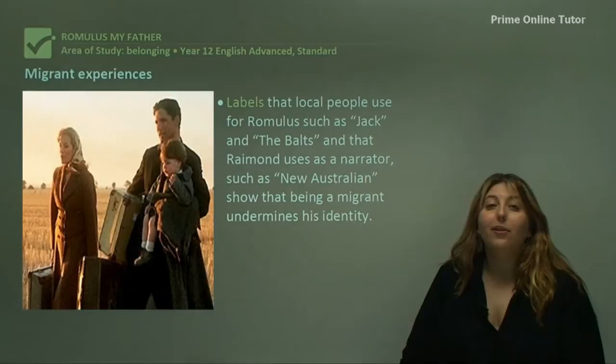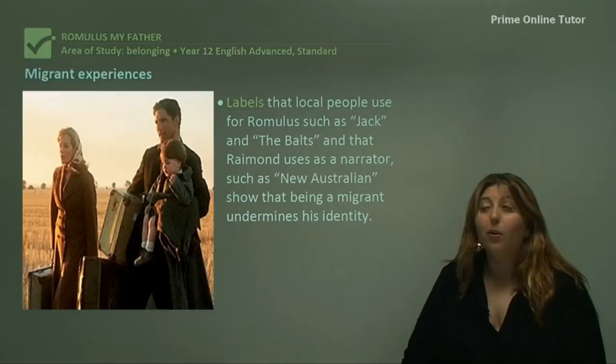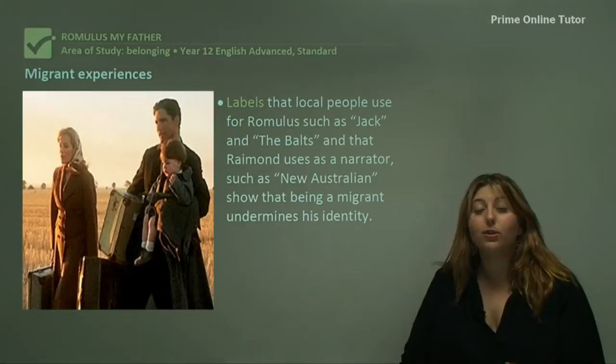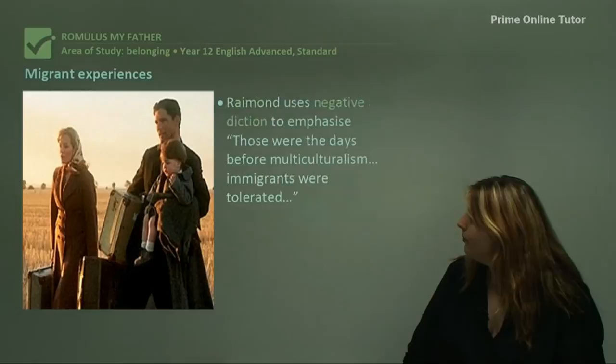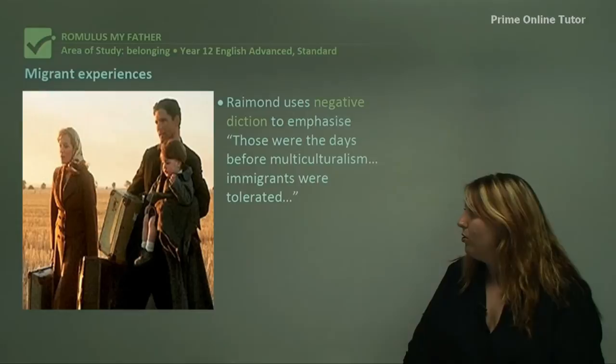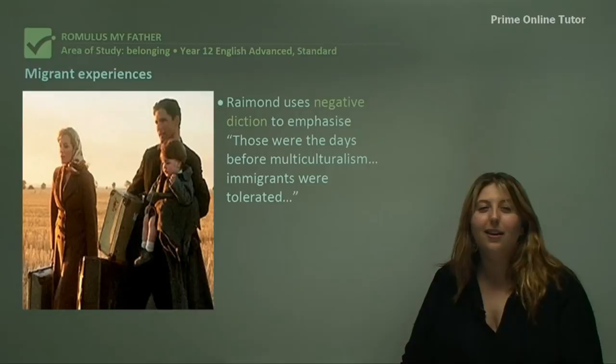So let's start with migrant experiences. The labels that local people use for Romulus, such as 'Jack' and 'the Bolts', and the labels Raymond uses as narrator — like always referring to them as 'new Australians' — shows that being a migrant has a tendency to undermine one's sense of identity. People actually lose their names to their environment. Raymond uses negative diction to emphasize: 'Those were the days before multiculturalism. Immigrants were tolerated.' That negative diction indicates they're allowed to be there, but nobody really wants them.